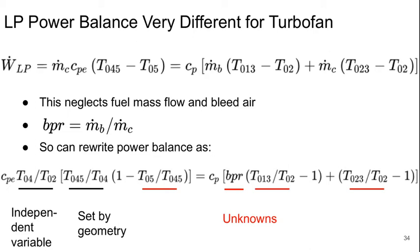if we define the bypass ratio as M dot in the bypass over M dot in the core, then we can rewrite the power balance in a way that we see the things we know and the things we don't know. So T0.4 over T0.2 is our independent variable. T0.4.5 over T0.4 is a constant set by geometry. And then we have four unknowns.